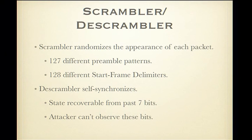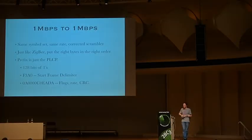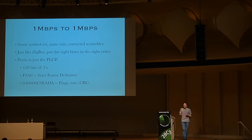For one megabit to one megabit injection, there's the same symbol set and same data rate — it's just like ZigBee. These are the exact bytes you put in to inject a one megabit per second packet: 128 bits of ones (0xFF bytes), then 0xF3A0 — the Wi-Fi equivalent of the 0xA7 — followed by flags, data rate, and a header checksum. You can then put any body with a proper checksum after it, and that body will go in at one megabit per second.